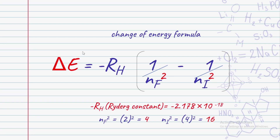So, the Rydberg constant — this is the value, it's a constant. Minus 2.178 times 10 raised to minus 18.